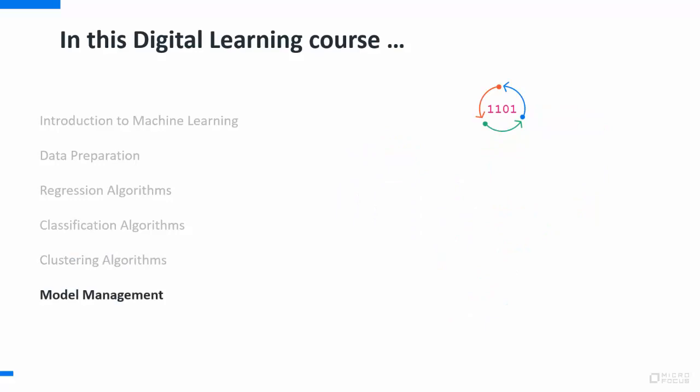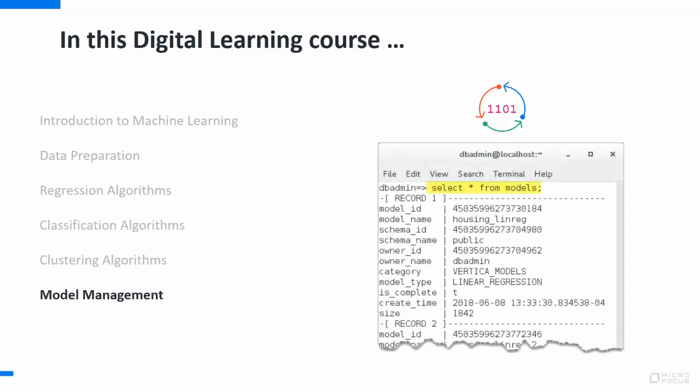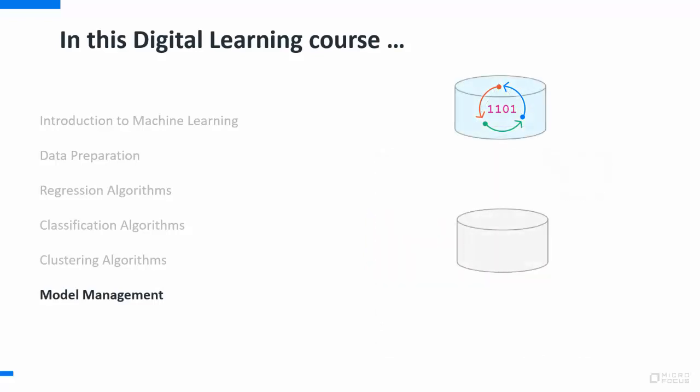In the model building modules, you learned how to build predictive models using the machine learning algorithms in Vertica and how to evaluate the predictive capabilities of each model. In this module, you'll learn how to identify a model in the database, how to change the name, schema, and owner of a model, how to move a model from one Vertica database to another, and how to delete a model.